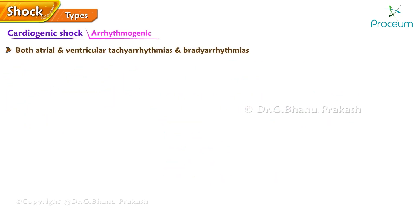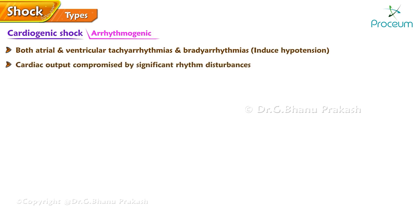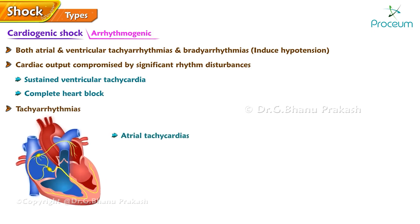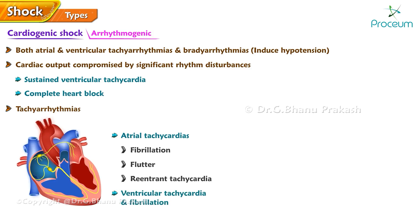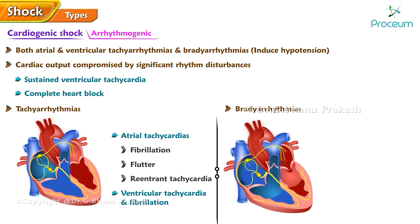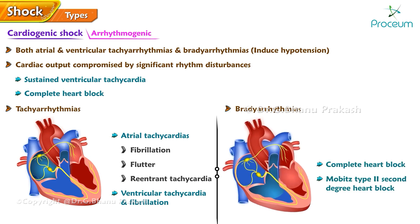Both atrial and ventricular tachyarrhythmias and bradyarrhythmias may induce hypotension, often contributing to states of shock. When cardiac output is severely compromised by significant rhythm disturbances — for example, sustained ventricular tachycardia or complete heart block — patients can present with cardiogenic shock. Tachyarrhythmias include atrial tachycardias like fibrillation, flutter, and reentrant tachycardia, as well as ventricular tachycardia and fibrillation. Bradyarrhythmias include complete heart block and Mobitz type 2 second-degree heart block.